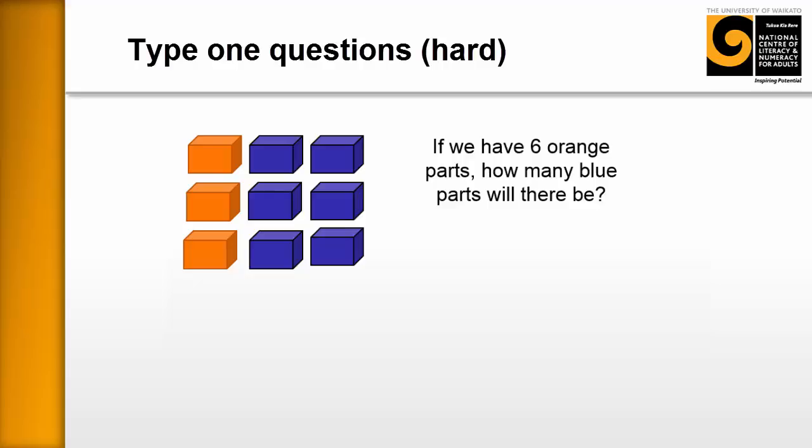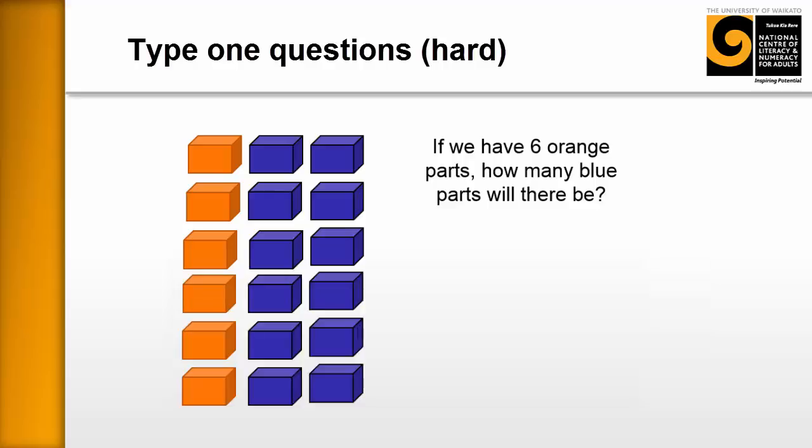So if there's six of them, what's happening? What's the relationship? And we're hoping that they're seeing that it's the twice as many relationship. And they might just model it, which we want them to do as much as possible to model it at this stage. And then you could have a discussion about what they've done.